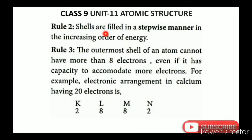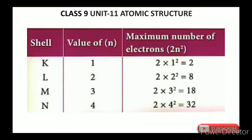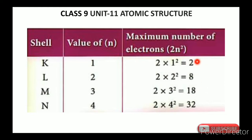Rule number 2: Shells are filled in a stepwise manner in the increasing order of energy. That is, electrons fill the inner shells first before moving to outer shells. For example, if we have 5 electrons, K shell gets 2, then L shell gets the remaining 3.